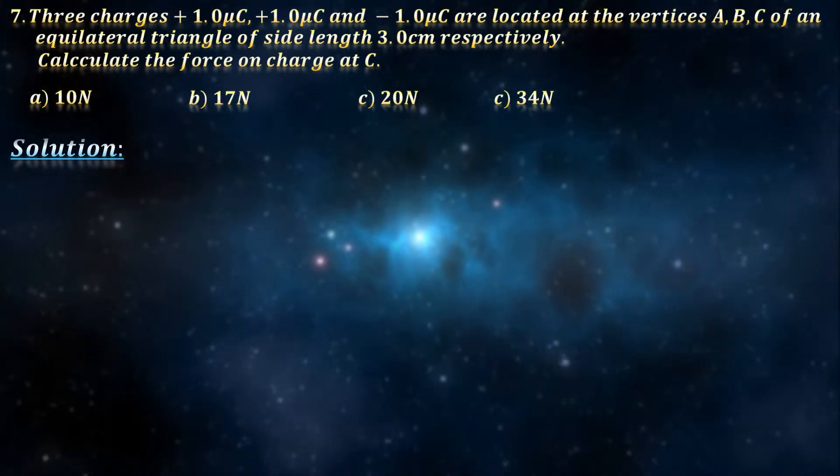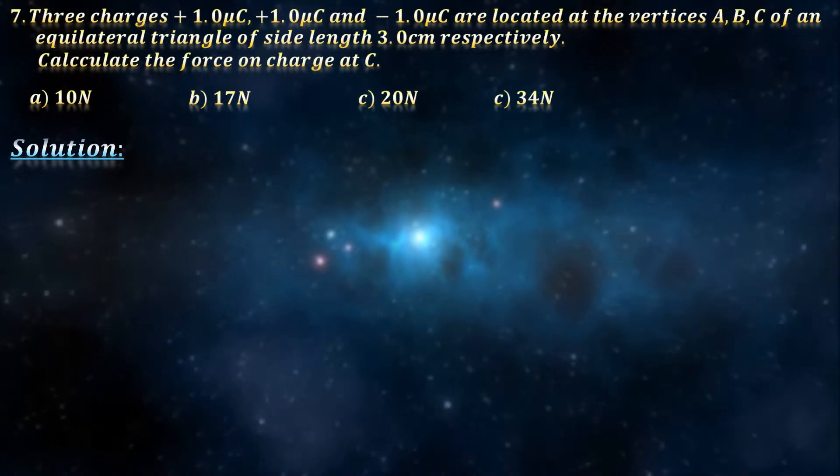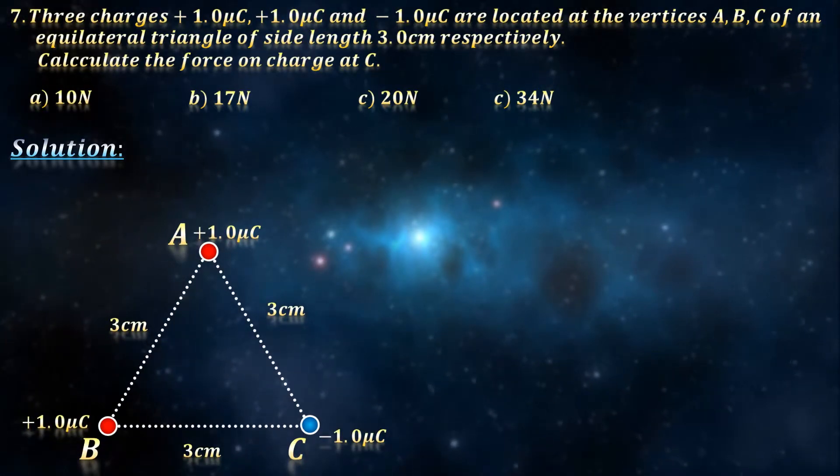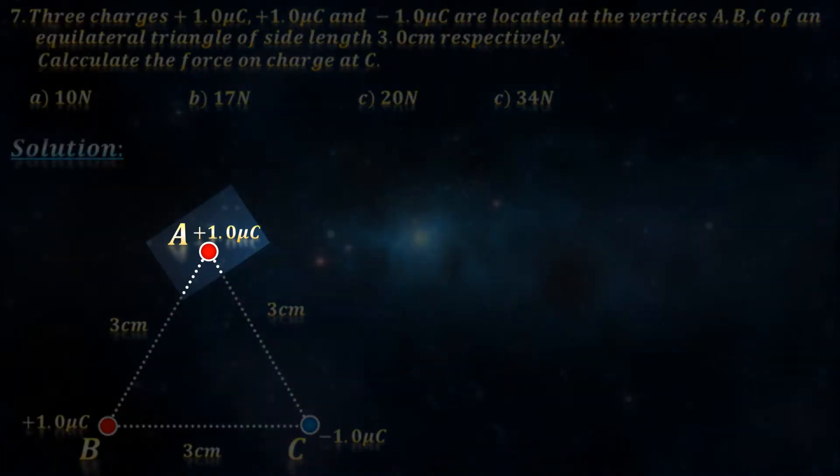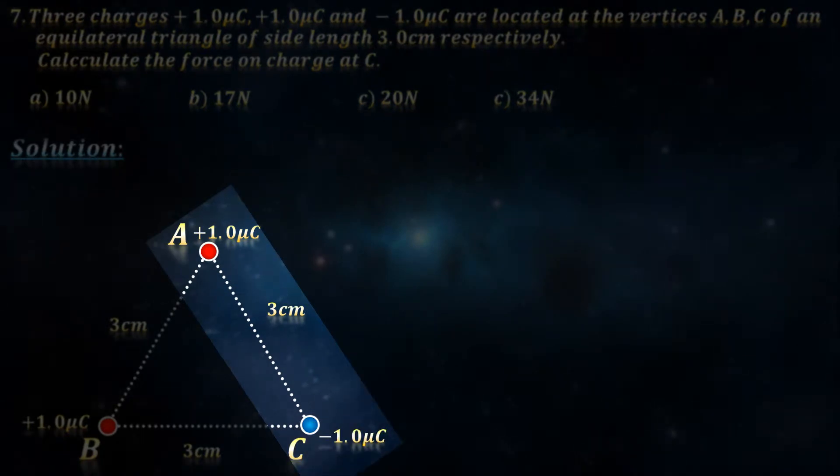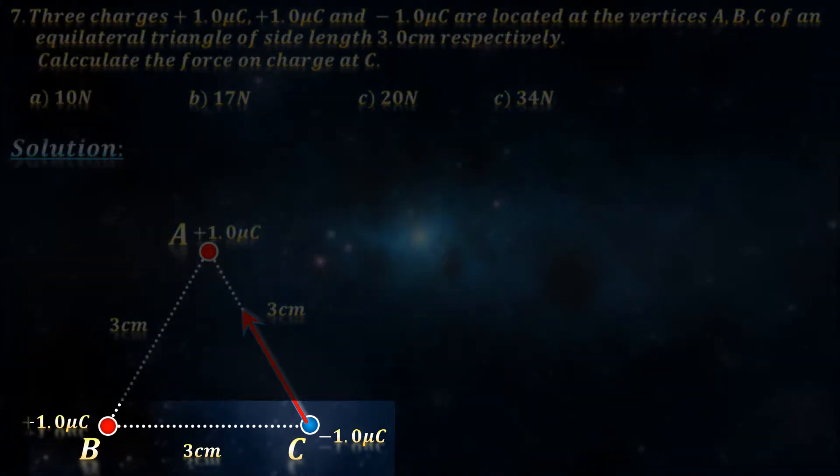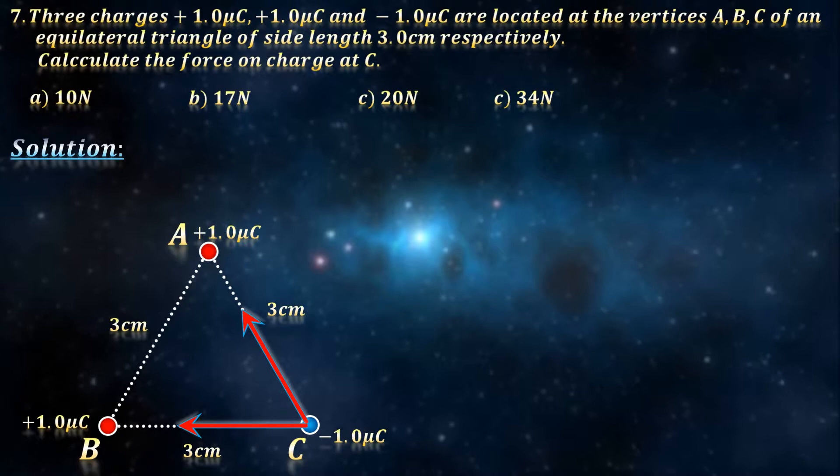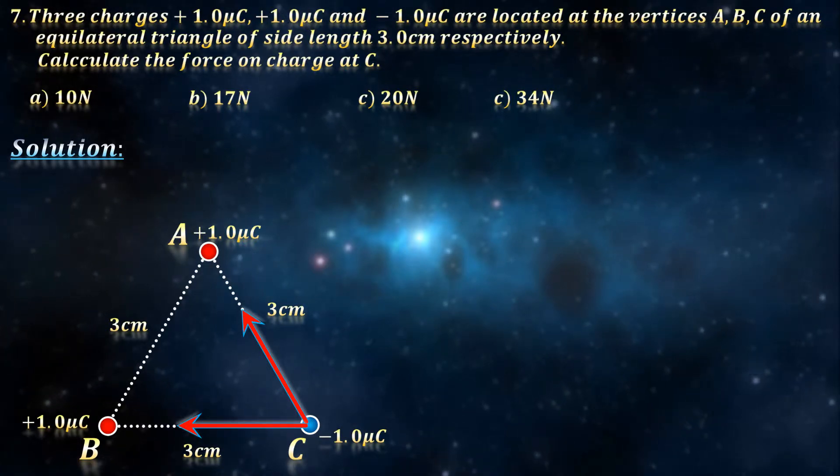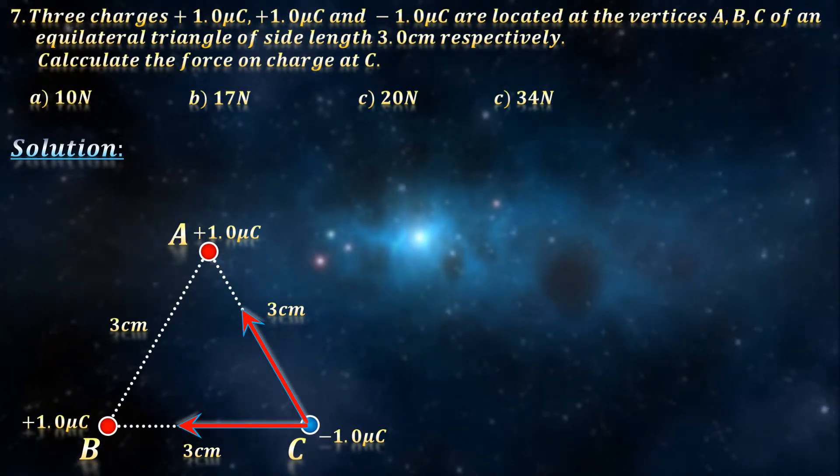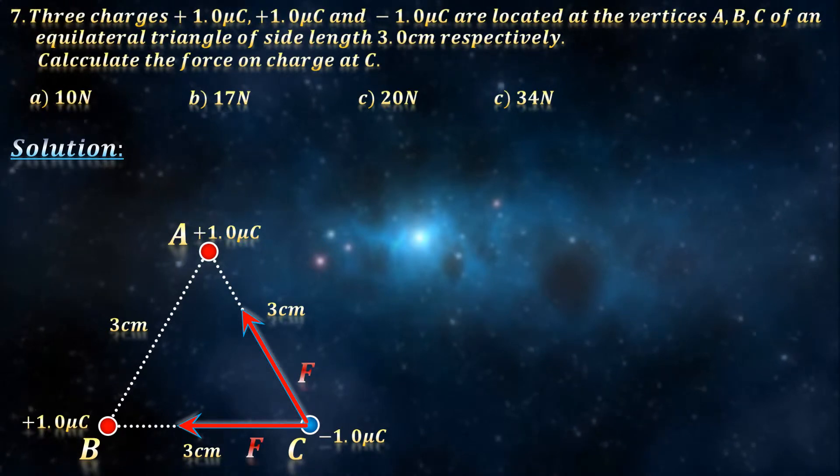The first step to solving these problems is always drawing force vectors. A and C attract each other. Thus, C is pulled towards A. B and C also attract each other. Thus, C is pulled towards B as well. The distance between the charges are the same, so obviously the two forces are equal in magnitude. Say F.